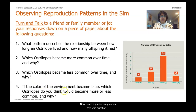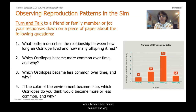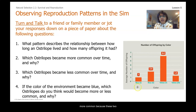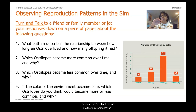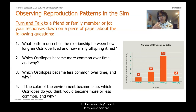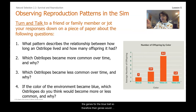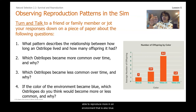Question four was a prediction question. If the color of the environment became blue, which australobes would become more or less common and why? If we change the environment color to blue, the australobes with a blue color level of one or four would become more common, because they would then blend into that blue environment, survive longer, reproduce more, and thus have more offspring. And as we know, those parents carry the genes for the blue trait, so their genes would be expressed as the trait of blue color because they're able to reproduce more in a blue environment.